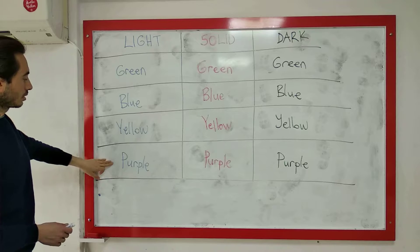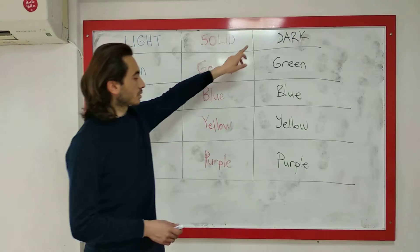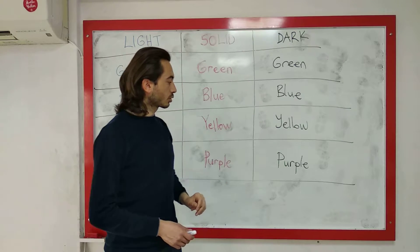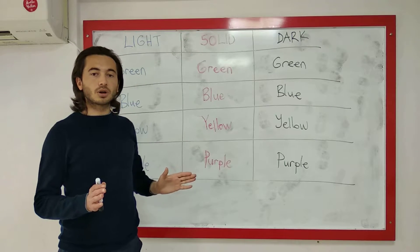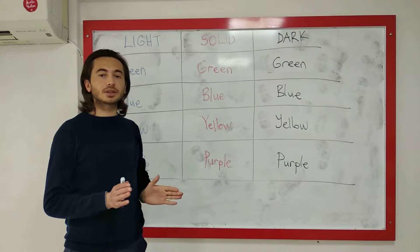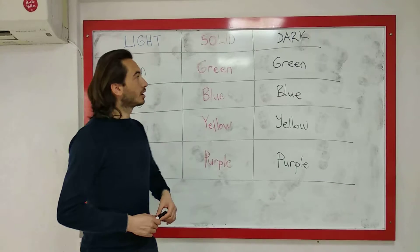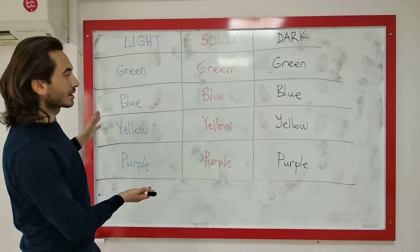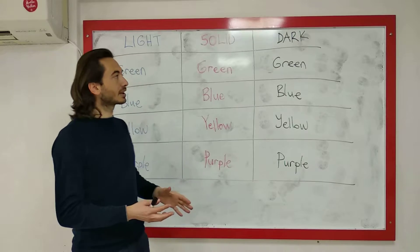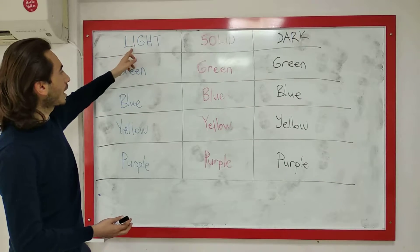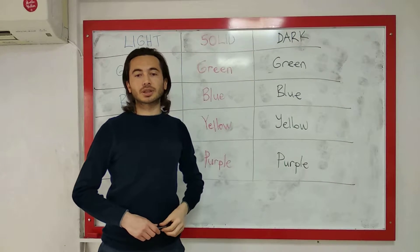Light purple açık mor, dark purple koyu mor, solid purple ortası yani gerçek mor diyebiliriz. Bu kural sadece bu renkler için değil bütün renkler için de geçerlidir. Bütün renkler için light, solid, dark ifadelerini kullanabilirsiniz.